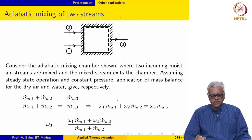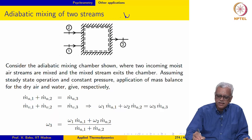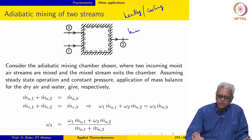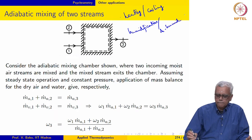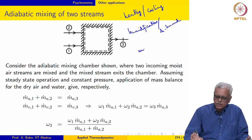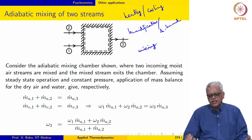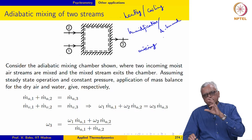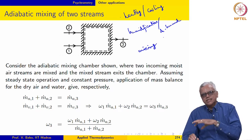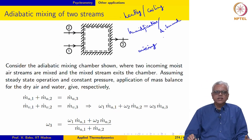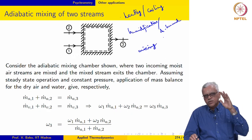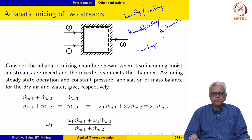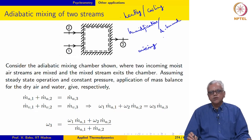In HVAC, we mentioned four unit processes: heating/cooling and humidification/dehumidification as the four unit operations. Mixing of two streams may also be considered as a psychrometric application, because we can adjust the moisture content or temperature of an air stream by mixing it with another air stream with an appropriate moisture content and temperature.